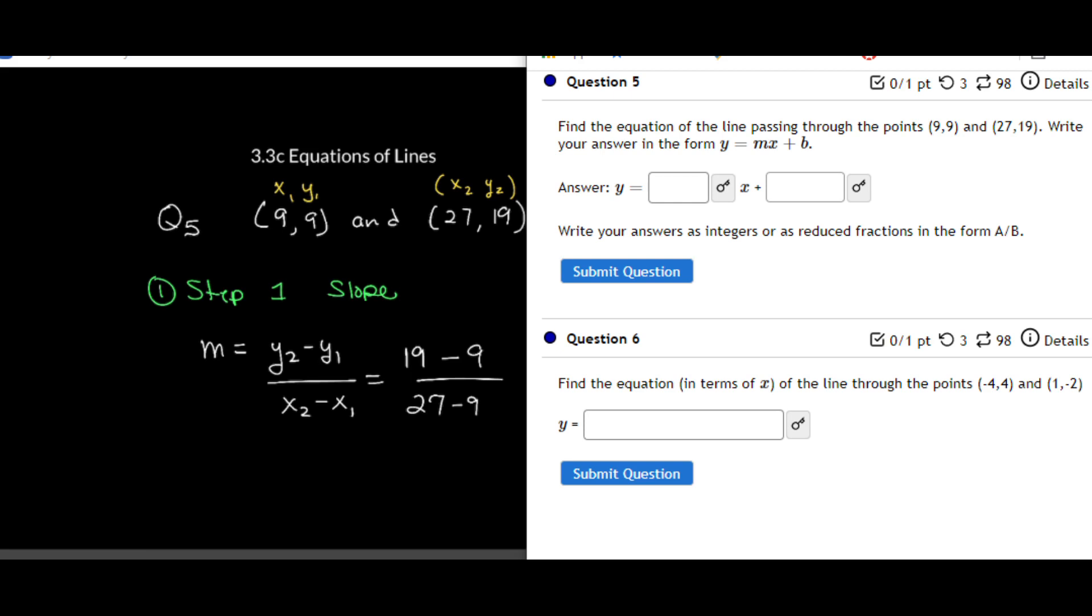And in the denominator, I have x2, which is 27, minus x1, which is also a 9. I go ahead and subtract. When I go ahead and subtract, 19 minus 9 is 10, and in the denominator, 27 minus 9 gives me 18. Now, you must reduce this fraction.